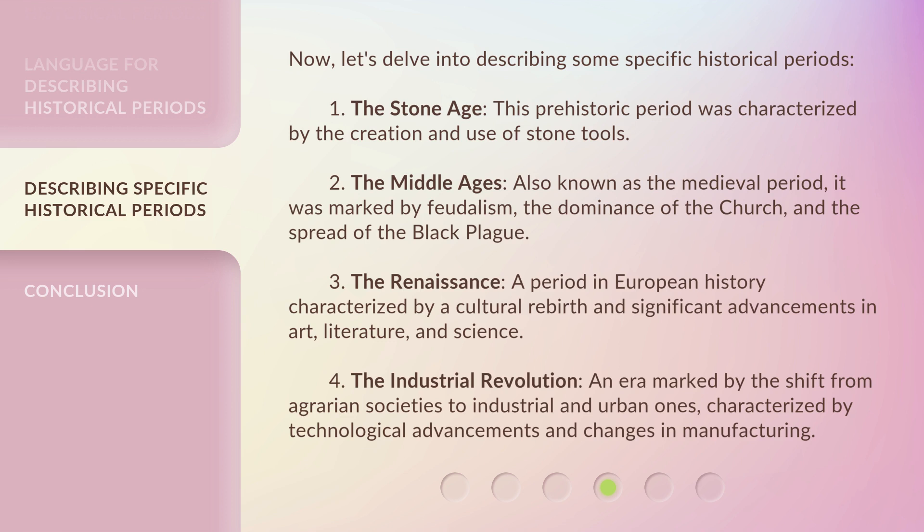Third, the Renaissance — a period in European history characterized by a cultural rebirth and significant advancements in art, literature, and science. Fourth, the Industrial Revolution — an era marked by the shift from agrarian societies to industrial and urban ones, characterized by technological advancements and changes in manufacturing.